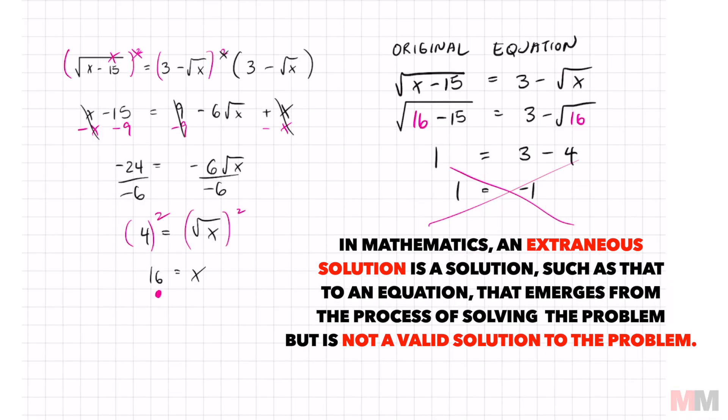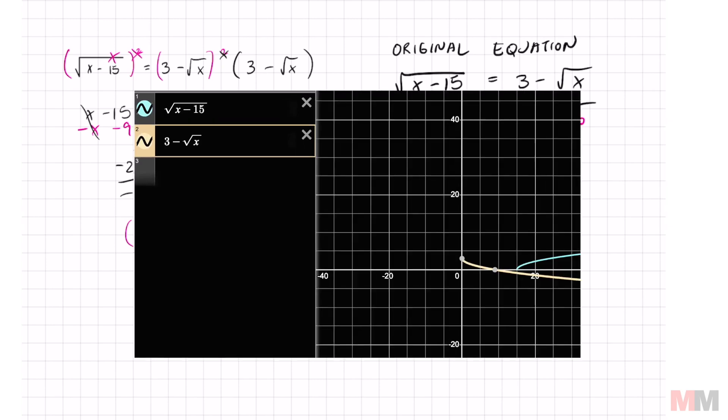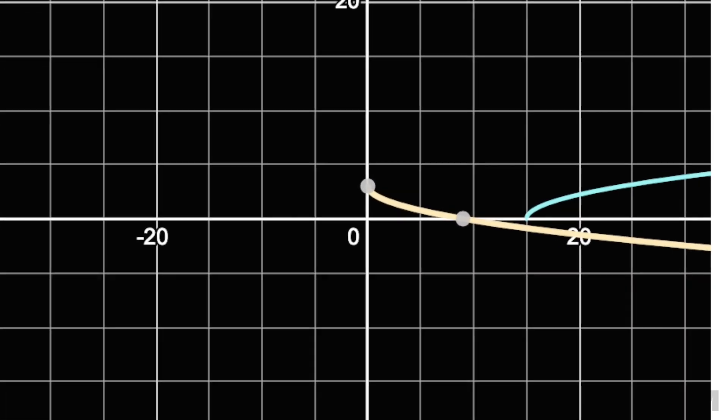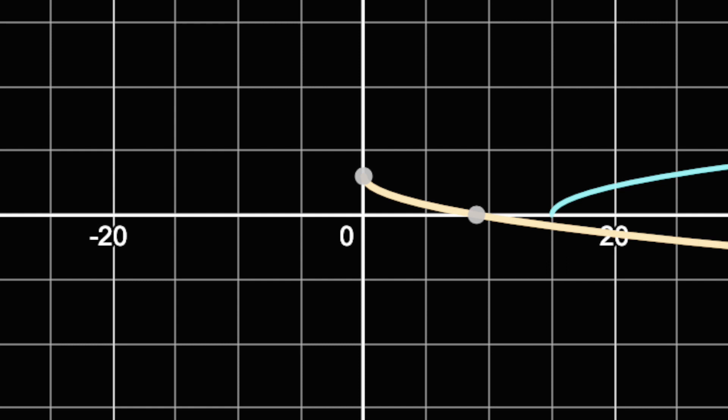Seeing is believing, so let's graph it on Desmos. As you can see, these two equations never intersect. Therefore, there is no solution.